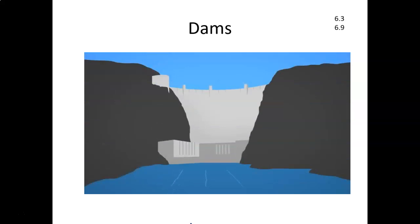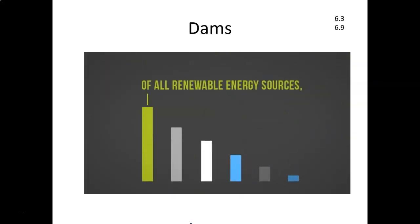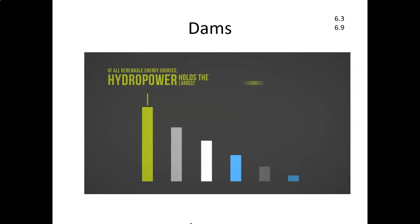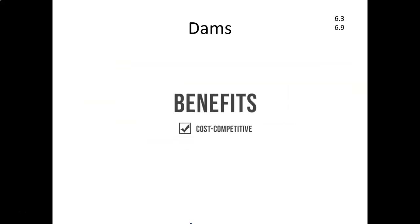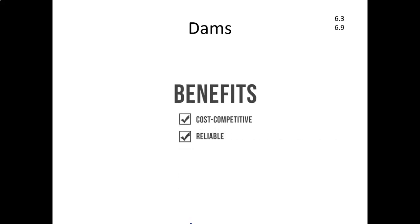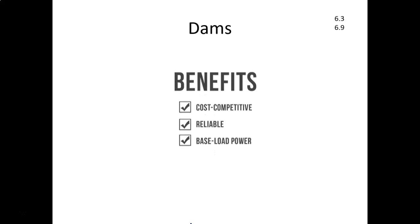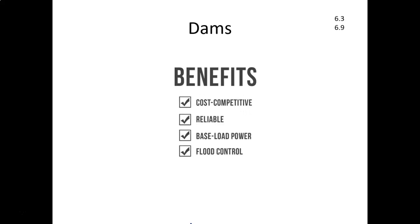The Hoover Dam in the United States produces a whopping 2,074 megawatts, enough to serve 1.3 million people. Of all renewable energy sources, hydropower holds the largest share of worldwide electricity production. Hydropower is cost-competitive even though initial building costs can be high, quite reliable compared to other renewables, and can be used as base load power. In some cases, dammed reservoirs can also help with flood control and provide a reliable water supply for communities.